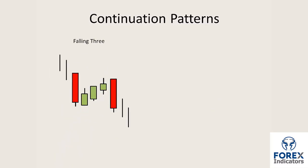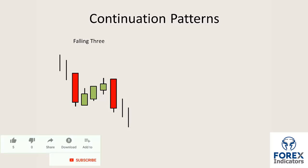The last of the continuation patterns we're going to look at is what's called the falling three. Here the market is trending downwards — we print a long bearish candle which is then followed by three smaller candles pushing the market back up. Those three candles can be of either colour. After those three candles are printed, the market then rejects that recovery and the bears come back in and push the market down.